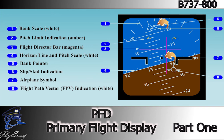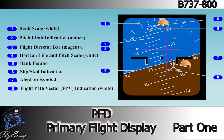The attitude indication displays the airplane pitch and roll attitude, referenced to the horizon. Pitch attitude is displayed by an airplane symbol against a pitch scale. The pitch scale is in 2.5 degree increments.